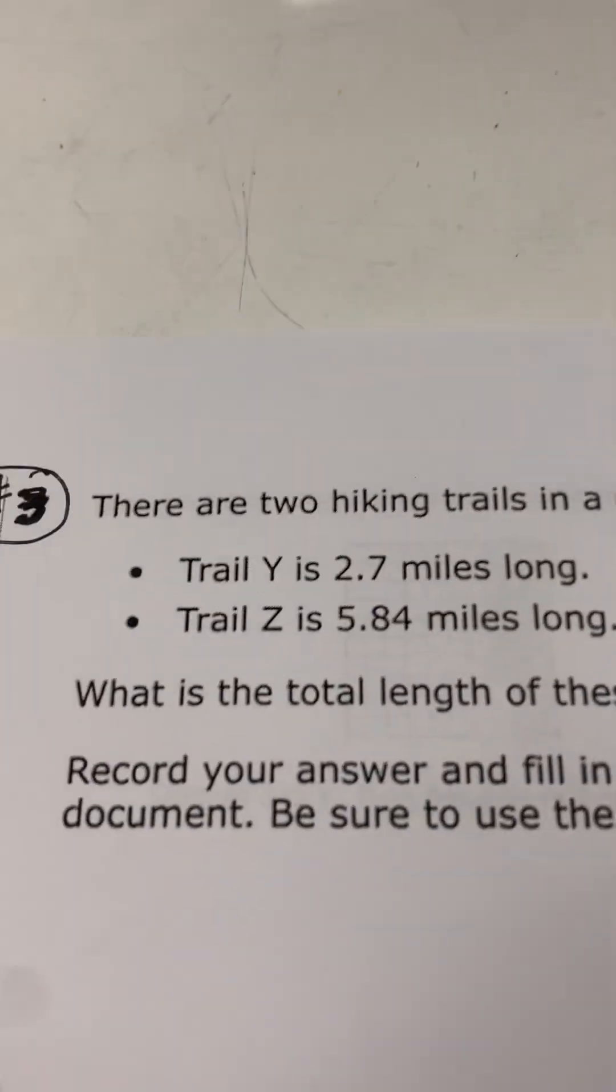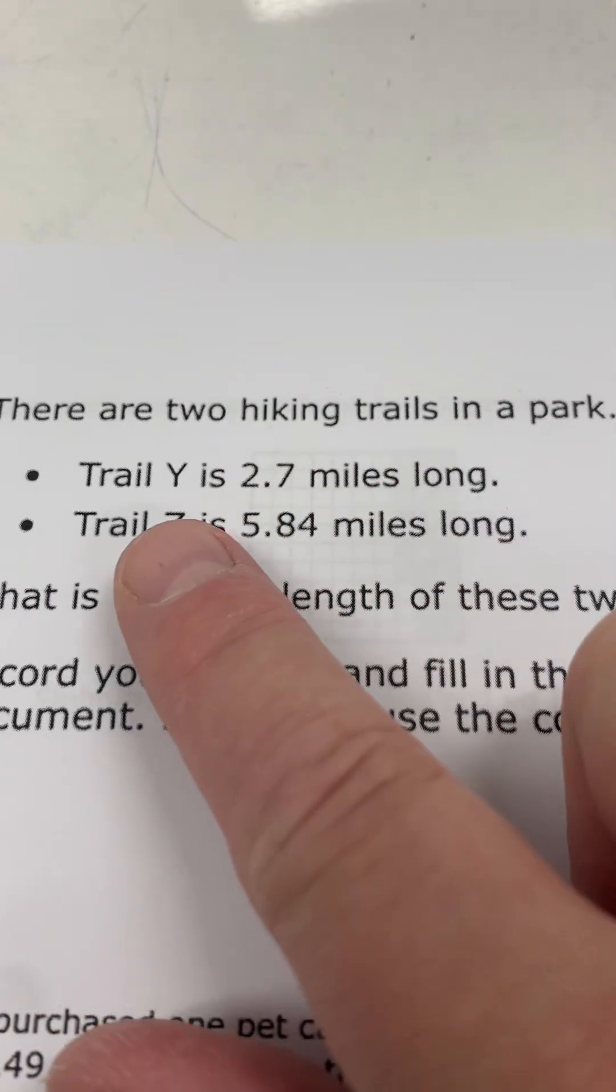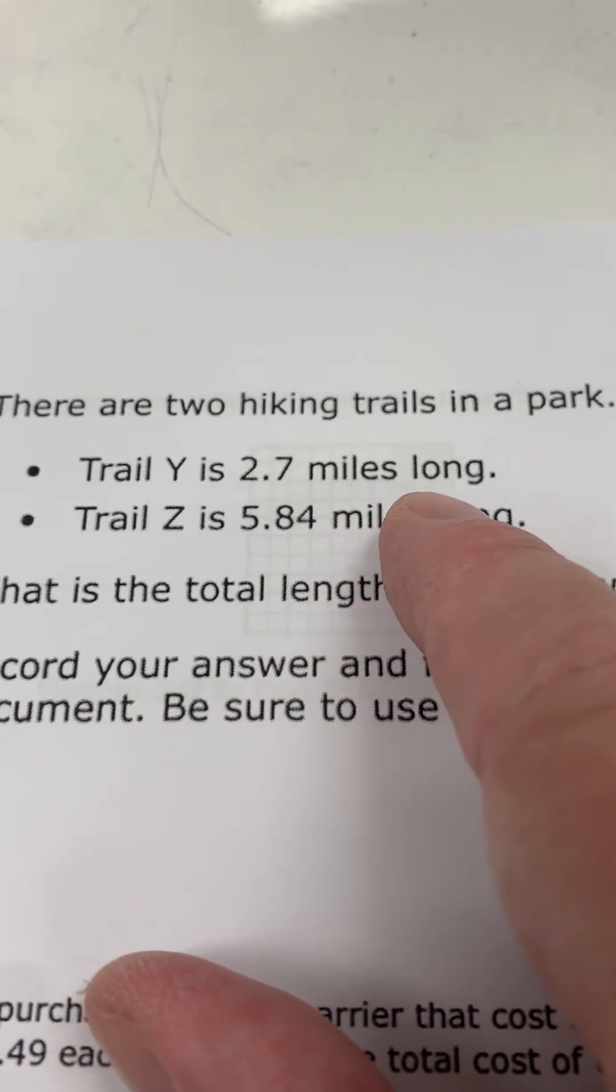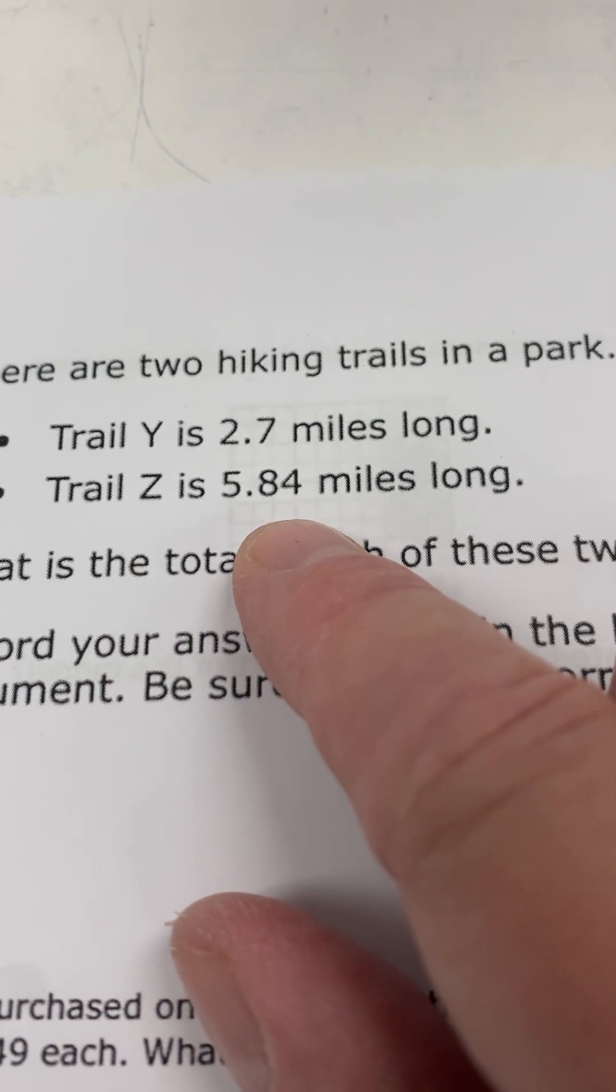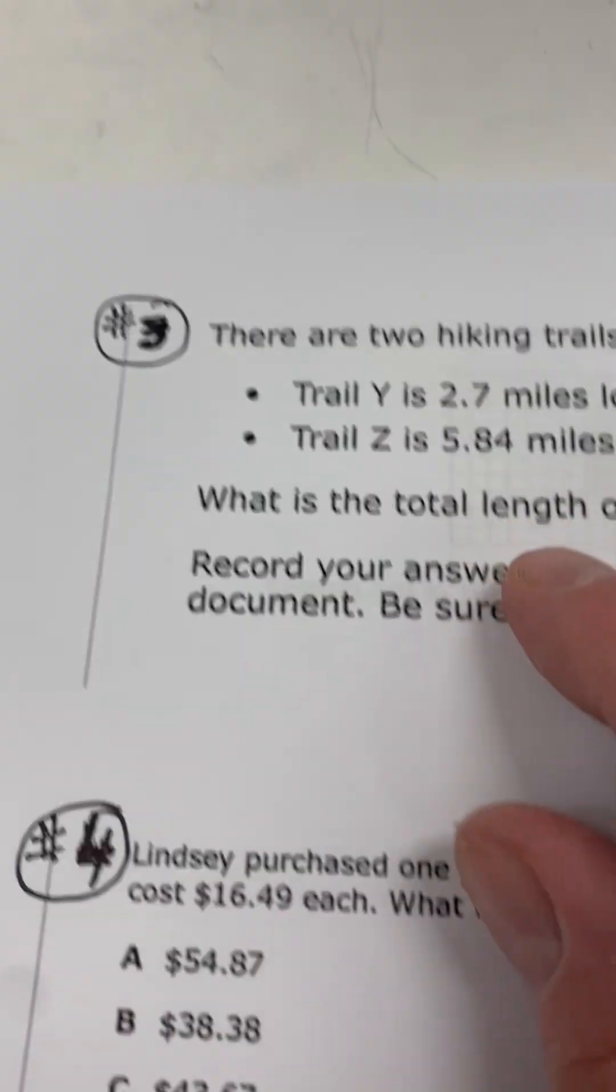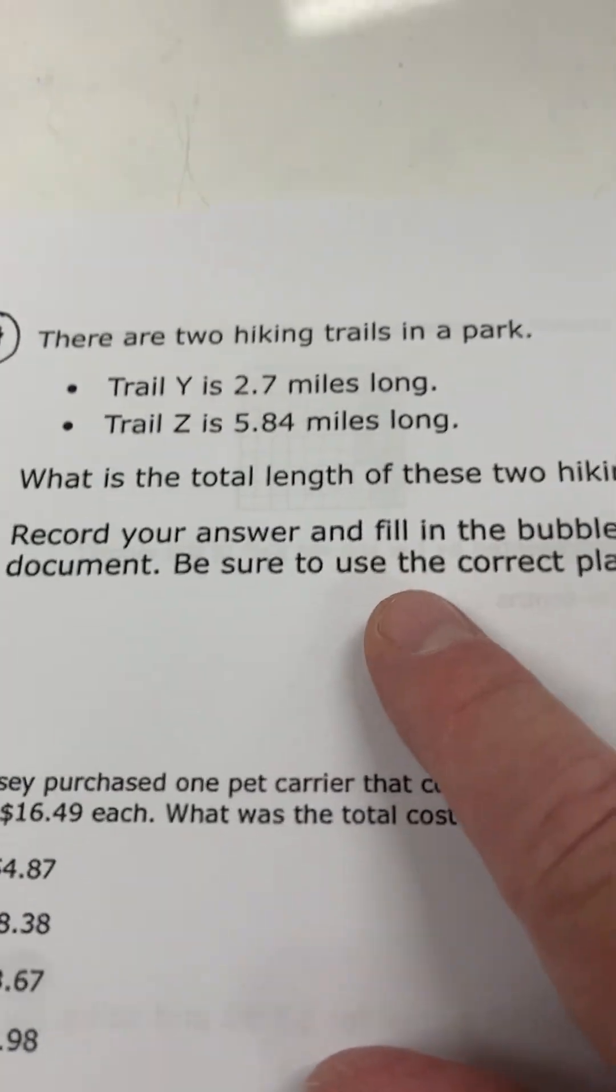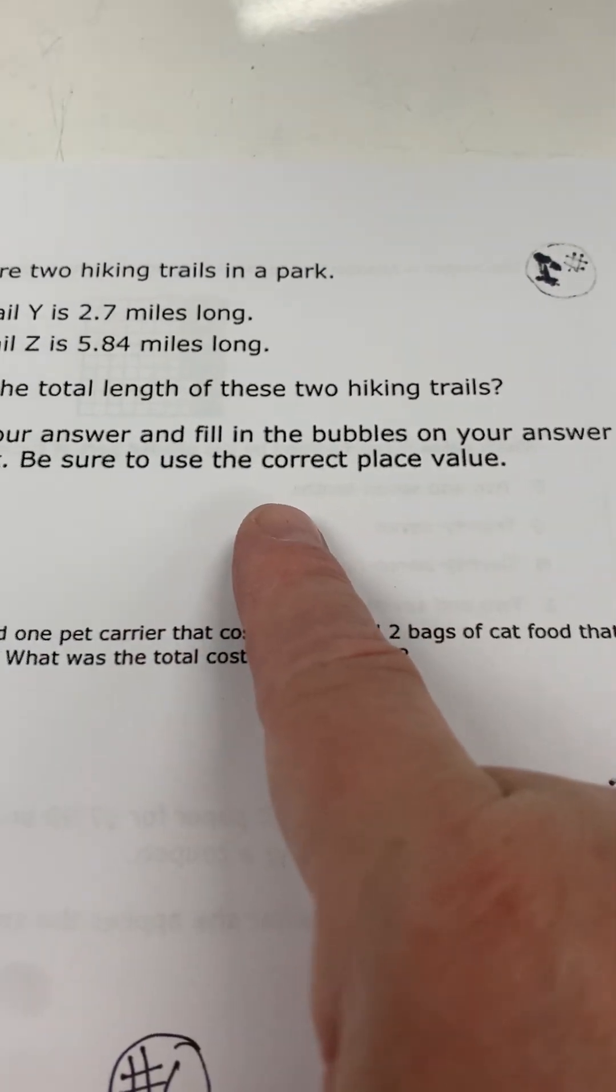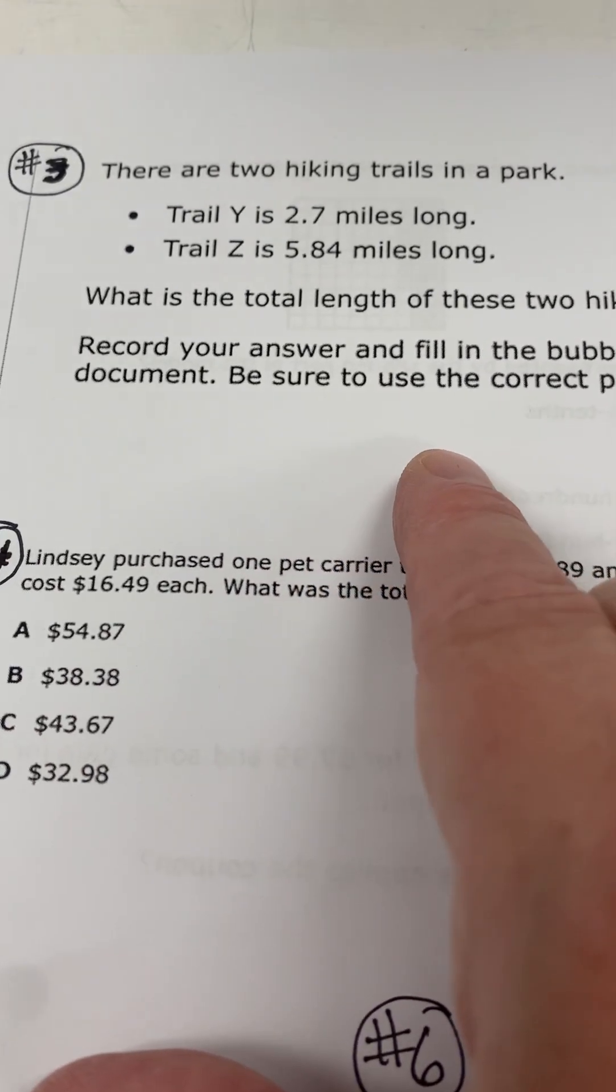All right, we'll go on to number three. It says there are two hiking trails in the park. Trail Y is 2.7 miles long. Trail Z is 5.84 miles long. What is the total length of these two hiking trails? Okay, and you don't have to bubble in anything on there, but just write your answer down here and don't forget to circle it.